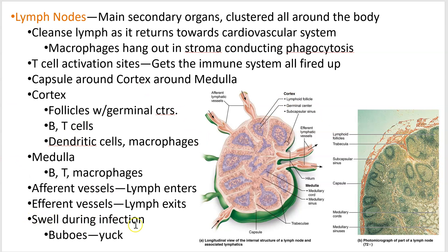If you get a severe infection, your lymph nodes can swell — you've probably felt that before. During the bubonic plague, most deadly in the 14th century in Europe, it killed millions and millions of people. That's where the name 'bubonic' comes from — the lymph nodes in your armpit, groin, and neck would swell so badly they'd eventually burst. They're basically a big sack of infected pus. Those swellings were called buboes, and thus the term bubonic plague.